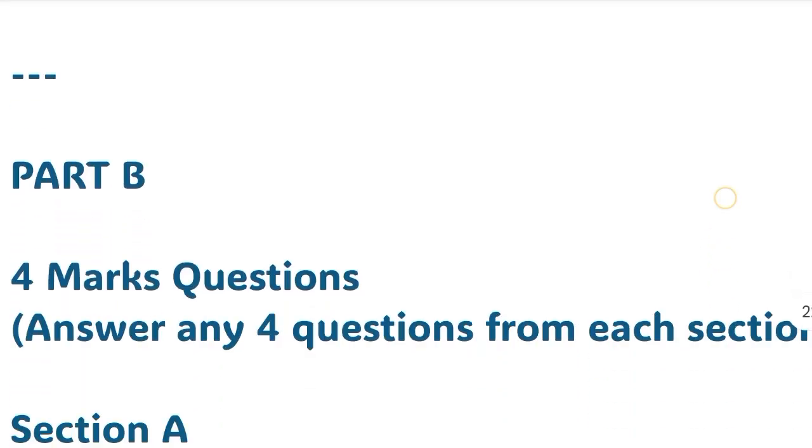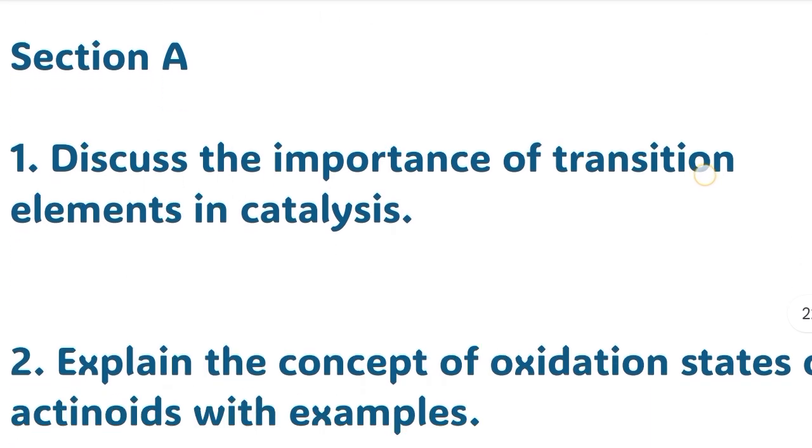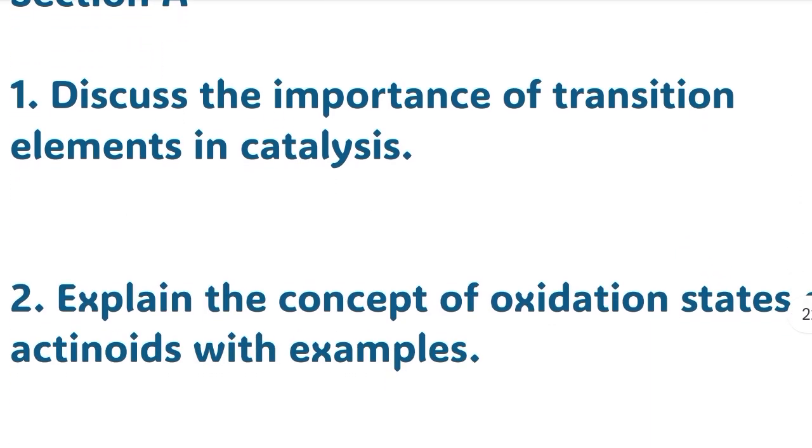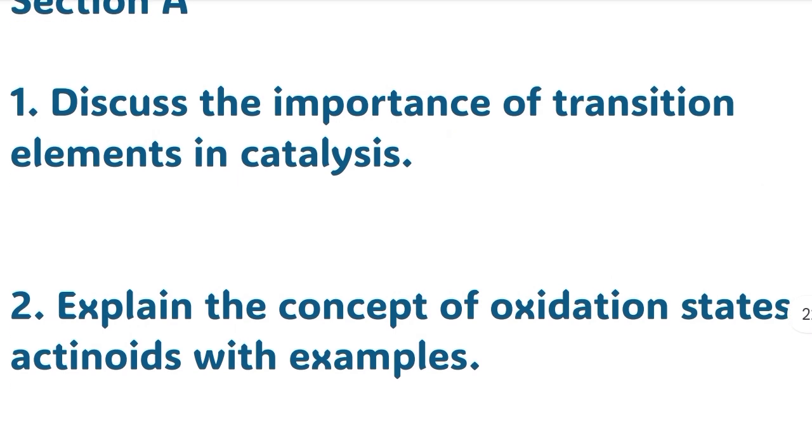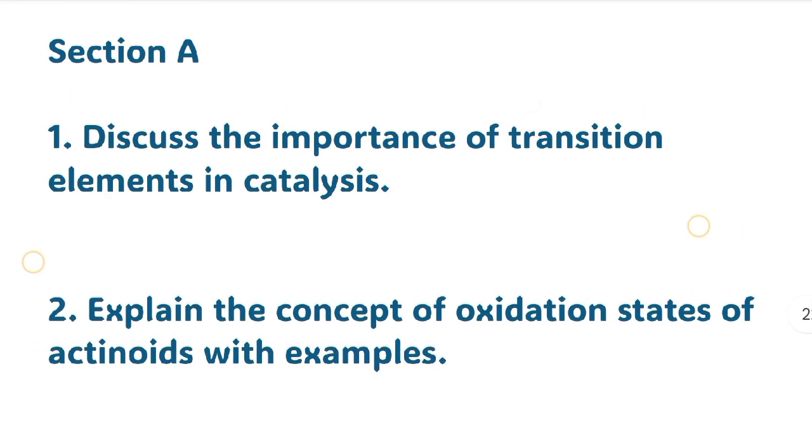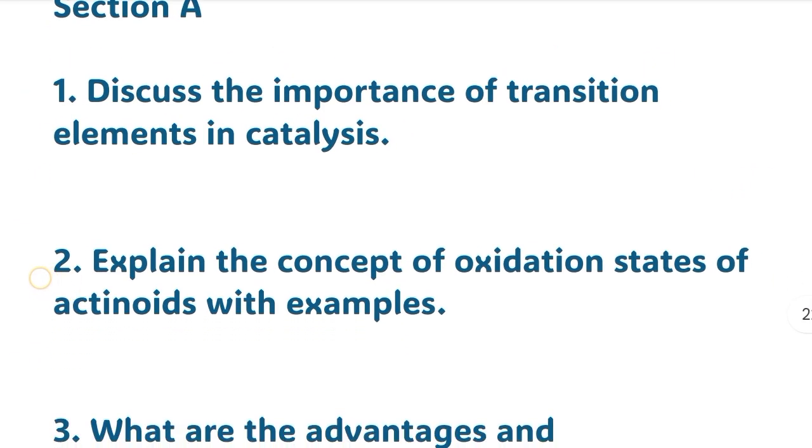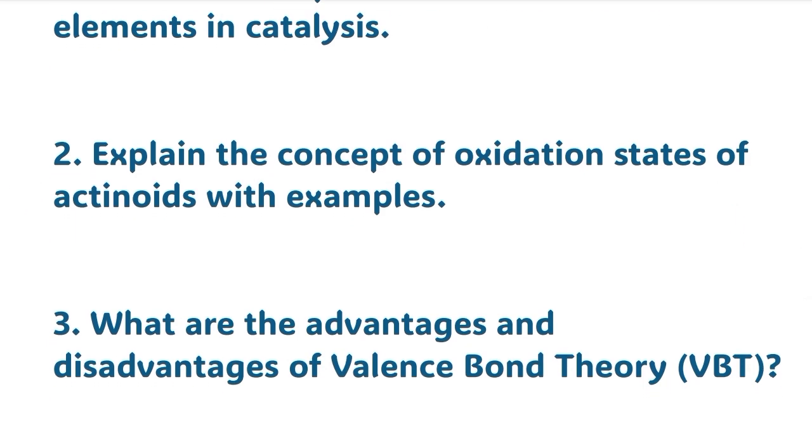Next we will discuss four marks questions, Part B Section A. First question: Discuss the importance of transition elements in catalysis. Second: Explain the concept of oxidation states of actinoids with examples.